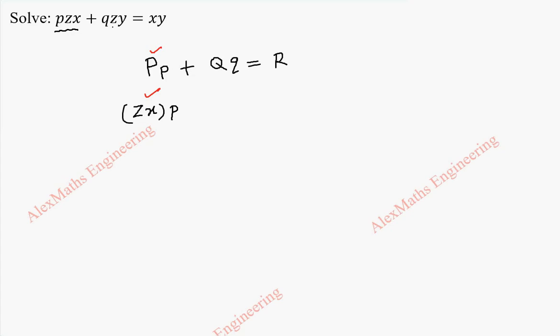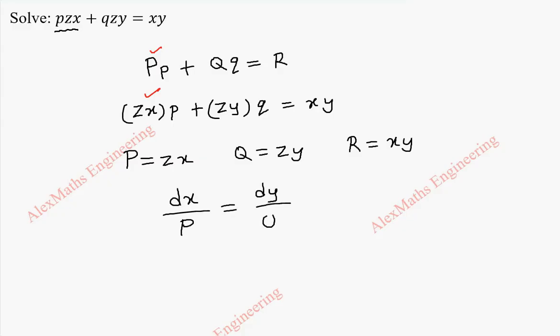In the same way, here we need capital Q into small q. So that is zy into small q and the last term is xy. From this we get capital P is zx, capital Q is zy, capital R is xy. To get a solution, we have to solve dx by capital P equal to dy by capital Q equal to dz by capital R.